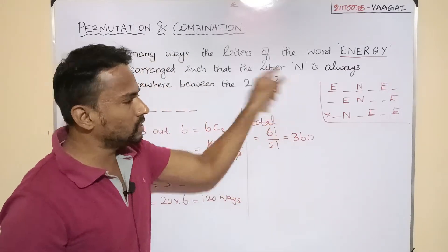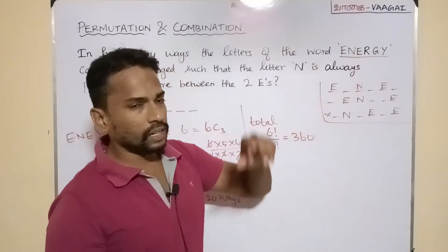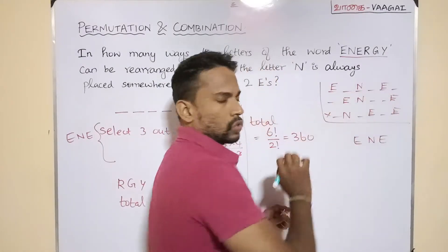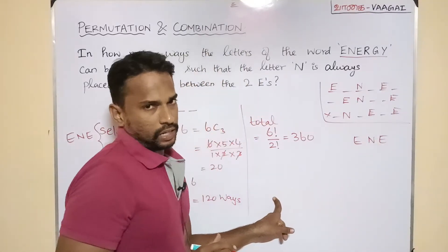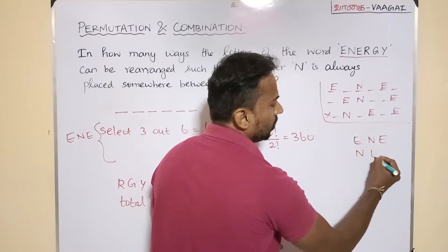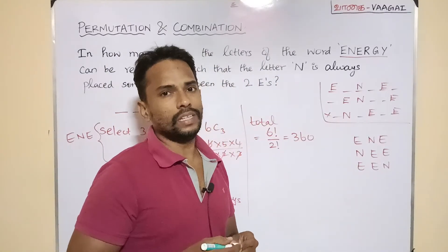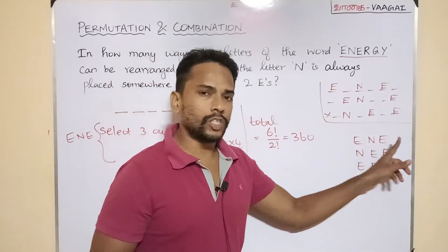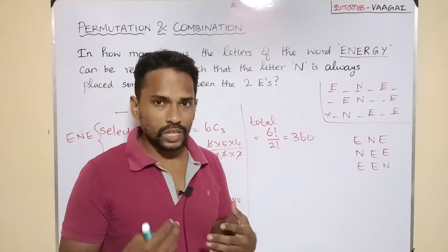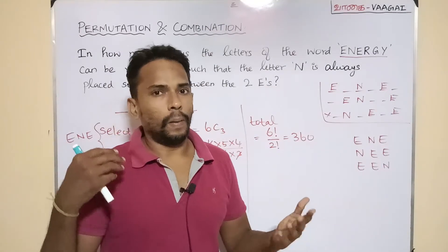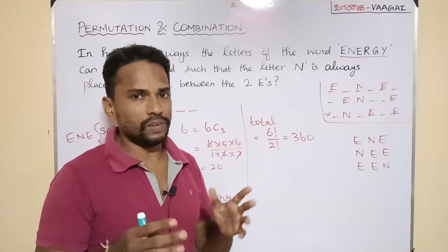Out of these 360 arrangements, we want those where N is positioned between the two E's. Let's look at the possible relative orderings of the three letters E, N, and E. They can appear in three distinct orders: either E...N...E (N between the two E's), or N...E...E (N to the left of both E's), or E...E...N (N to the right of both E's). Note: this holds regardless of whether they are adjacent or have gaps.